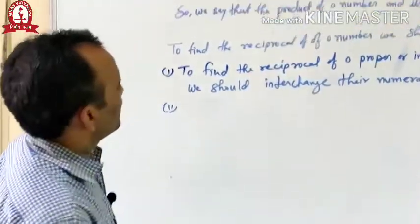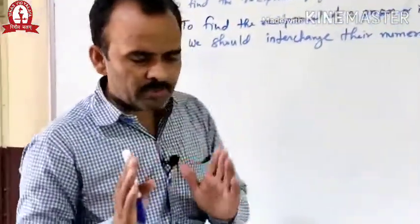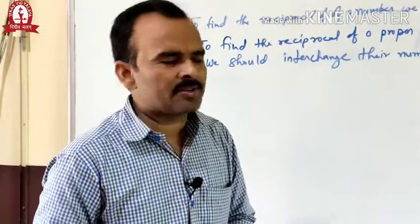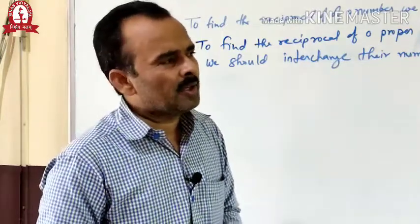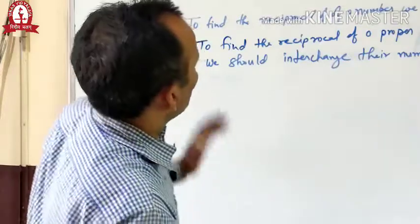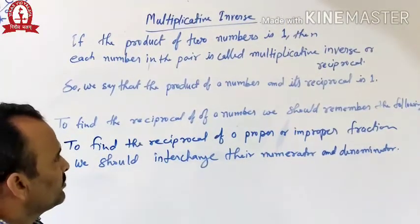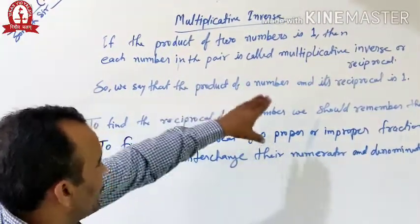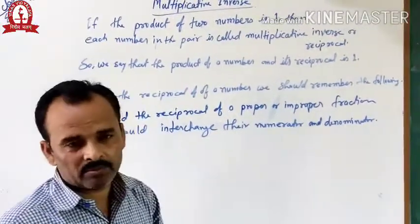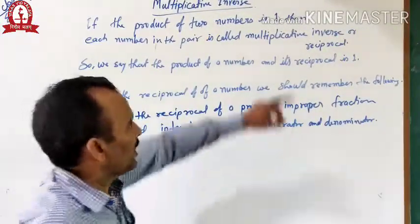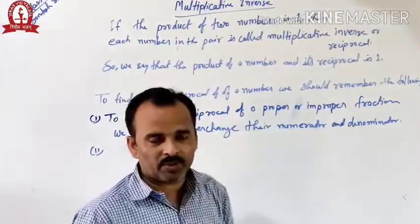Hello students, once again I want to explain multiplicative inverse. This is the most important point in mathematics to solve any sum belonging to fractions. Particularly it is most important for division. If the product of two numbers is 1, then each number in the pair is called multiplicative inverse or reciprocal. Multiplicative inverse is also known as reciprocal. So we say that the product of a number and its reciprocal is 1.